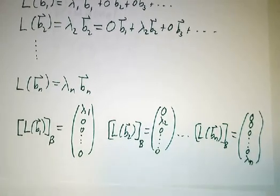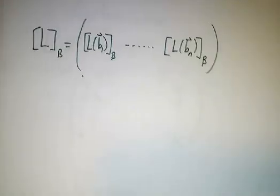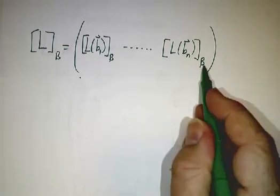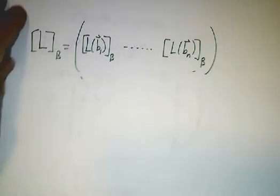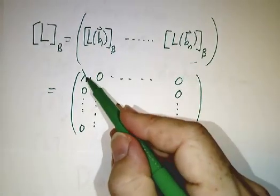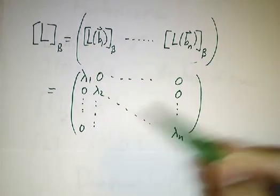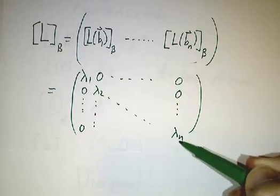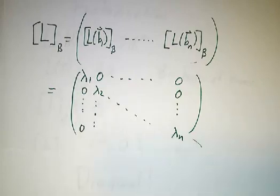So the way we make the matrix of the linear transformation is we take L of B_1 in the B basis up to L of B_n in the B basis and concatenate them. That's how we find matrices of linear transformations. And in this case, L of B_1 is λ_1, 0, 0, 0. L of B_2 is 0, λ_2, 0, 0. L of B_n is 0, 0, 0, λ_n. And so you wind up with this big diagonal matrix.